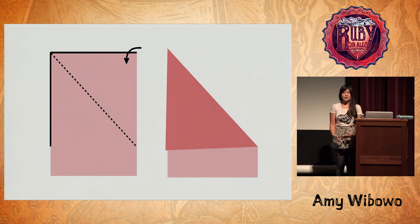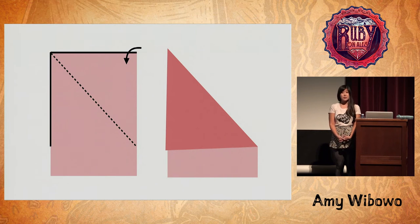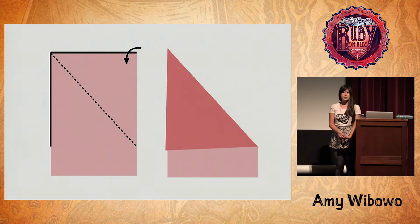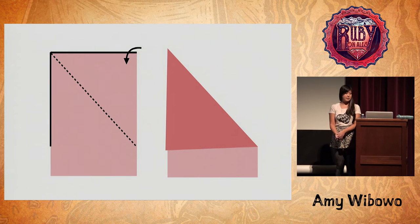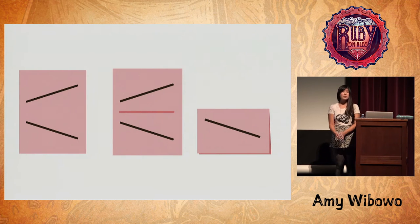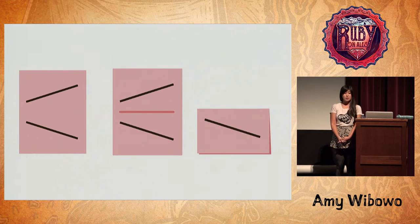Let's think of simple examples of how we can get lines to align up with each other on a piece of paper. For example, if you want the top and the side of a piece of paper to be aligned, you would fold at the 45-degree angle between them, and then you'd have the top and the side aligned. If you had two lines randomly drawn on a piece of paper and you wanted to align them, you'd fold somewhere in between them to line them up.